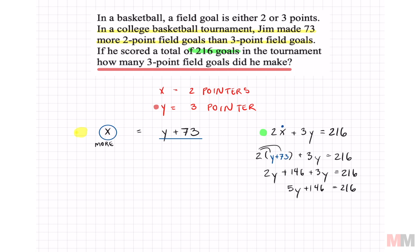Combine like terms. And then it's just a two-step equation from here. Subtract 146 on both sides. You're left with 5y equals 70. And the last part, just divide by 5 and you get y equals 14.